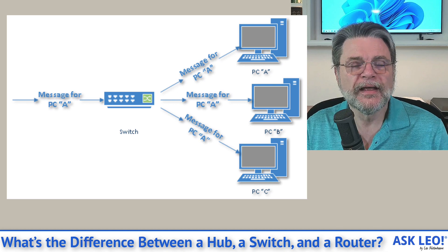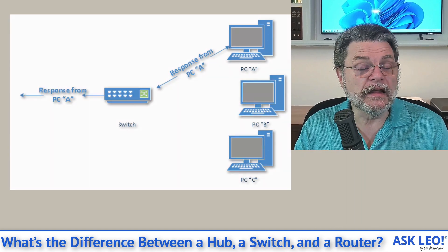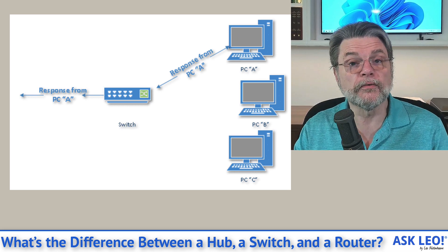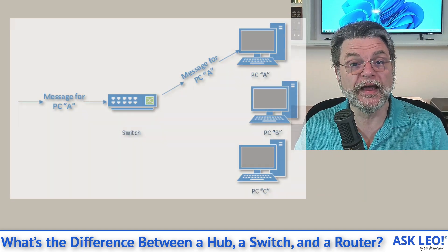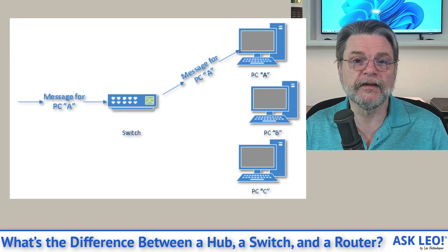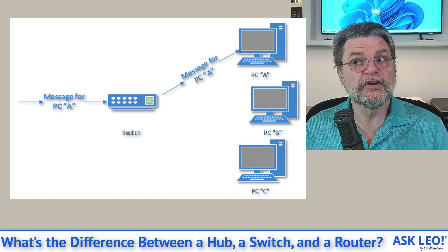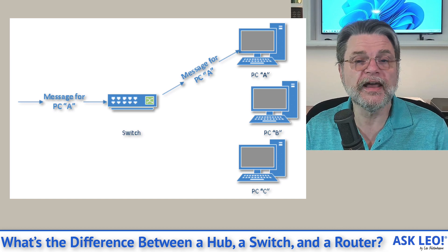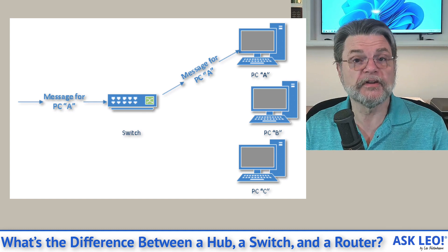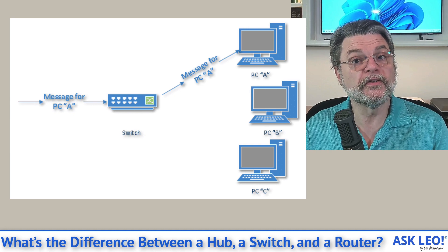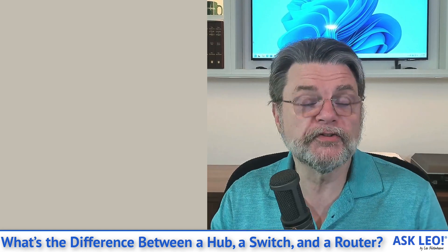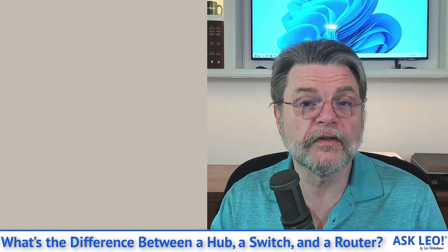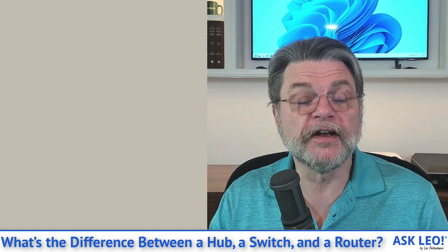The very first time a switch gets a message for, say, computer A, it doesn't know where computer A is, so it sends that message out to all of the other ports, not unlike a hub. But then computer A responds only on the connection it's connected to. That tells the switch that computer A is on this port. From there on out, whenever the switch gets a message for computer A, it only sends it out to the port it knows computer A is on. Eventually it builds up knowledge of which computers are on which connections and routes data efficiently.